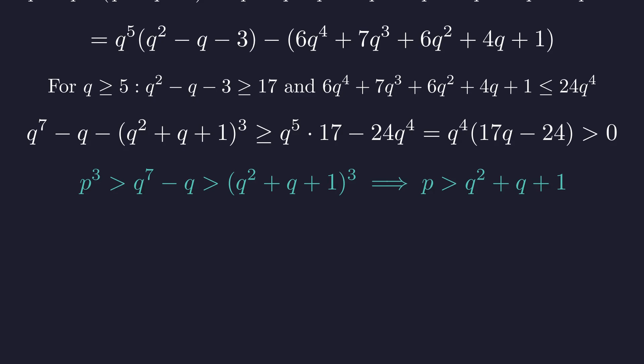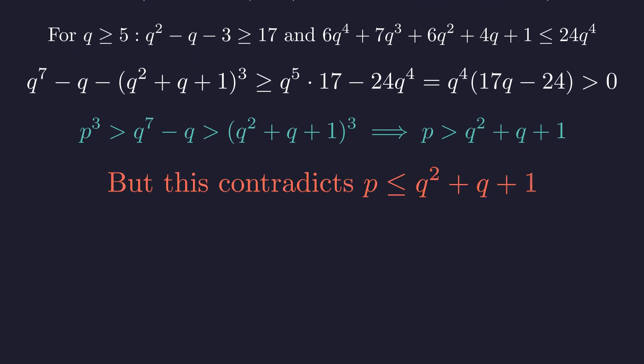This means p cubed is greater than the quantity q squared plus q plus 1 cubed, which implies p is greater than q squared plus q plus 1. This contradicts our earlier upper bound for p. Therefore, no prime q greater than or equal to 5 can give a solution.